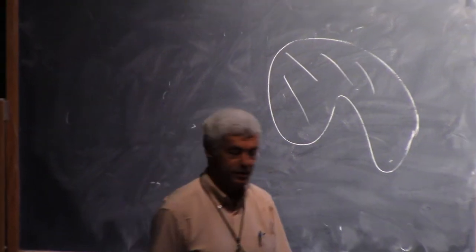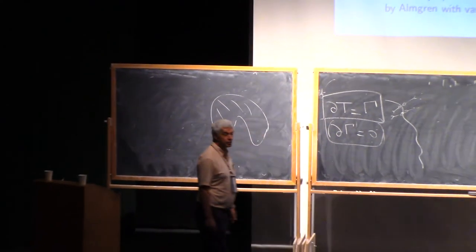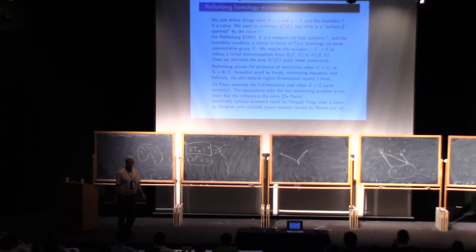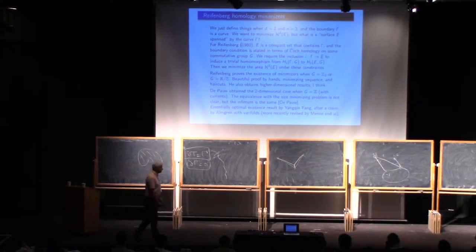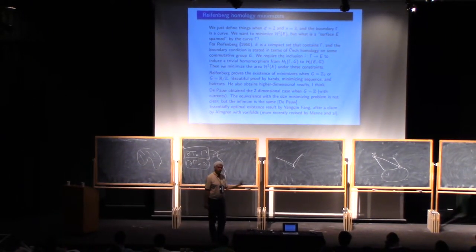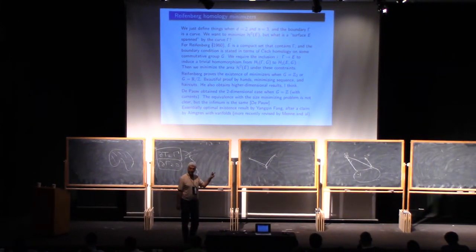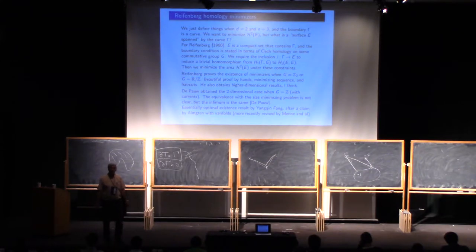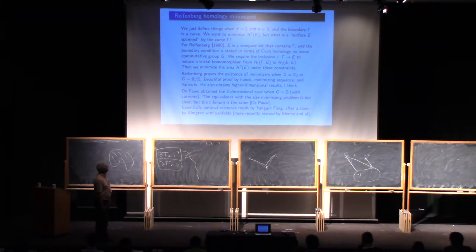You try to minimize the Hausdorff measure of dimension two of a set that bounds the curve in that way. Homology goes with a group of coefficients. Reifenberg proved it when the group of coefficients is a compact group like Z₂. Another good choice is R over Z, the torus. There was a result by Dupo working with coefficients in Z — people like to take coefficients in Z. And finally, I think there is a result by Thong saying that any group works.